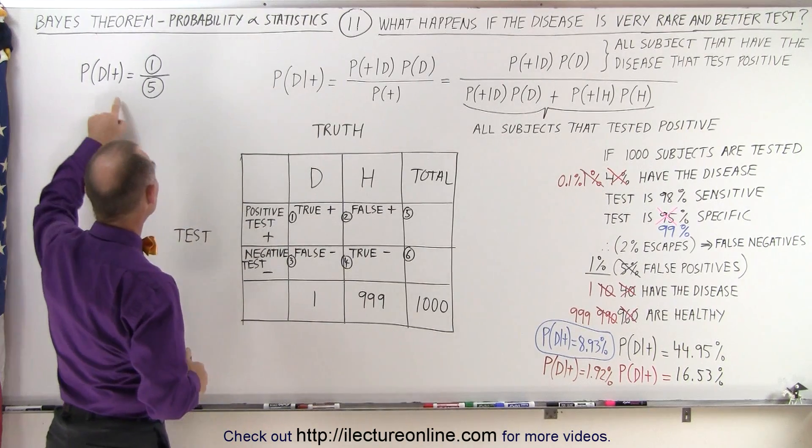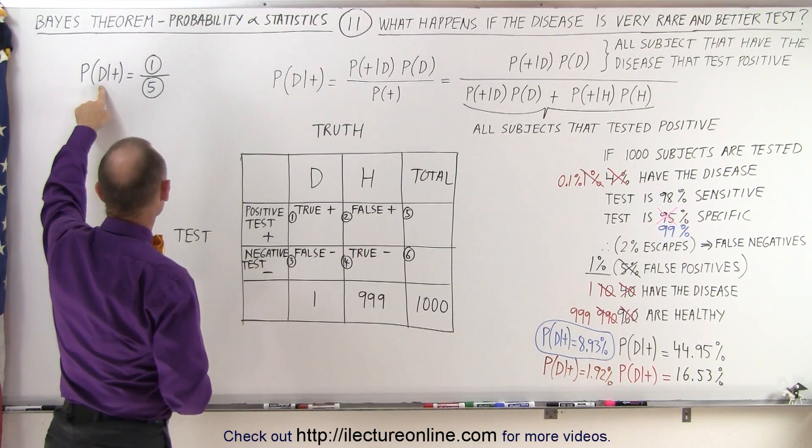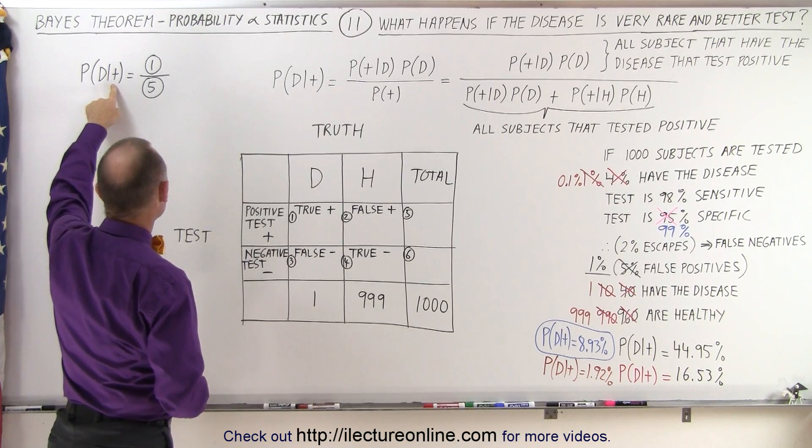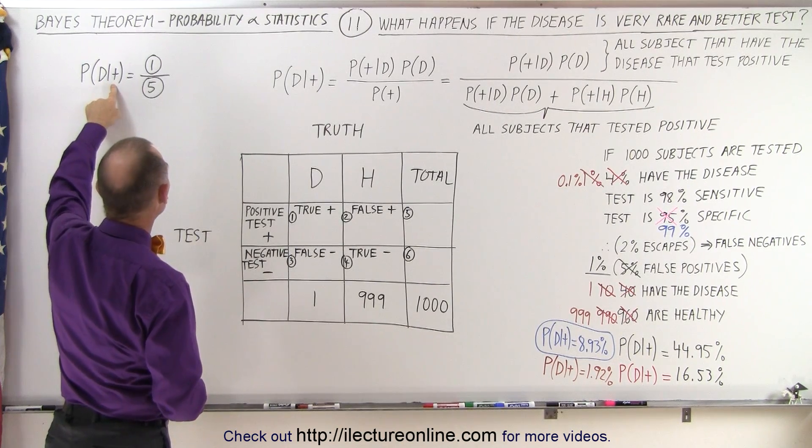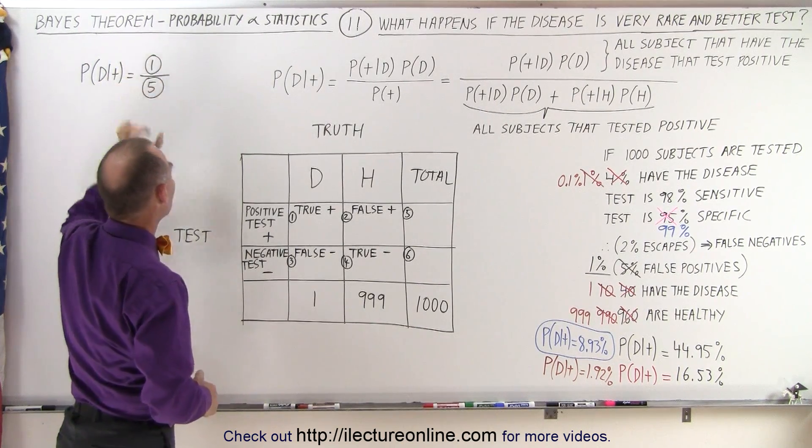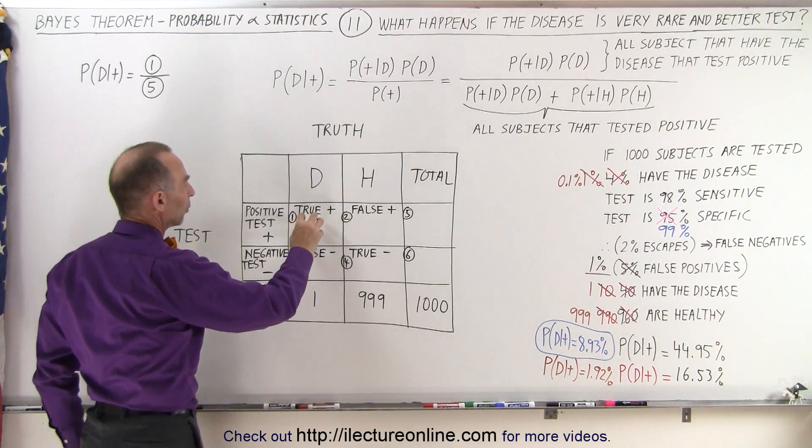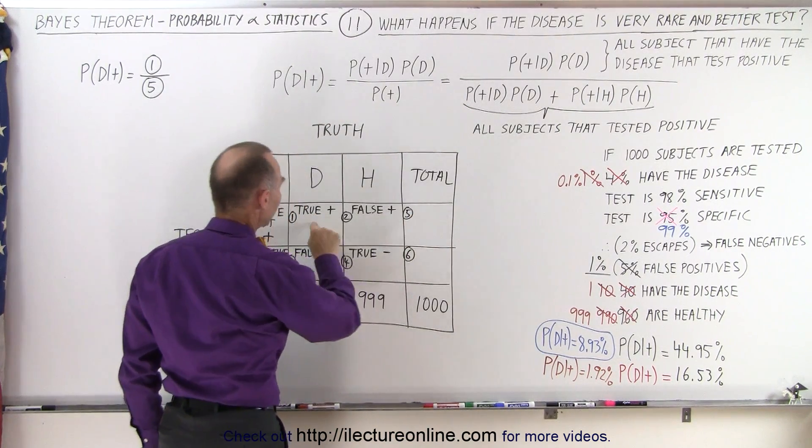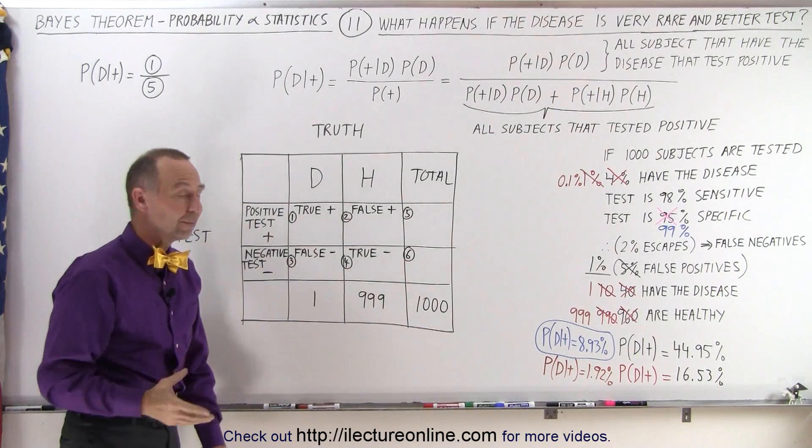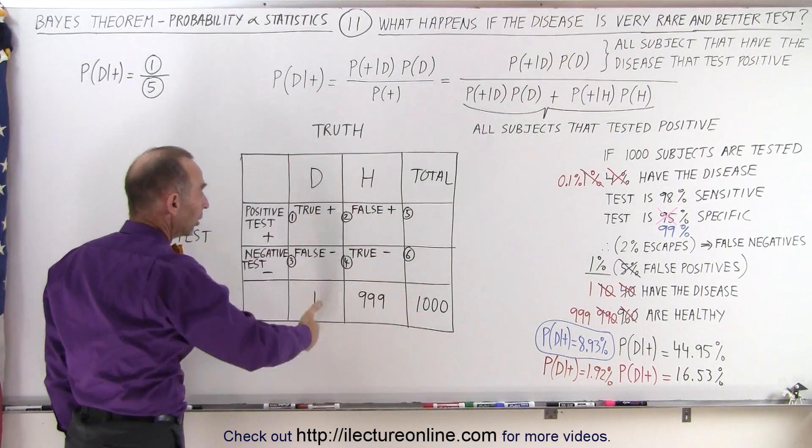And we discovered that the probability that you actually have the condition, the disease that you're testing for if you test positive, is going to be equal to cell number one divided by cell number five. So it's going to be equal to this divided by this. Now this here is the case where this is the truth column.